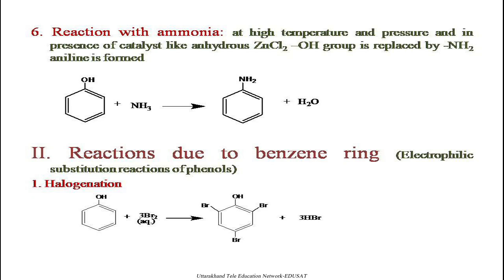Next, we will discuss the reactions of phenols due to the presence of the benzene ring. Phenols undergo electrophilic substitution reactions. These reactions occur because the OH group is an ortho-para director. As discussed in the resonance stabilization of the phenoxide ion, the electron density increases at the ortho and para positions. The oxygen of the OH group donates electrons to the ring at ortho and para positions. The incoming electrophile, being an electron-loving species, attaches to positions rich in electron density. Therefore, the incoming electrophile is substituted at the ortho or para position.